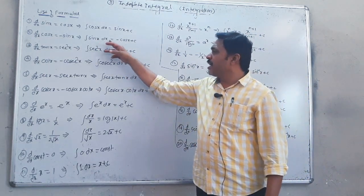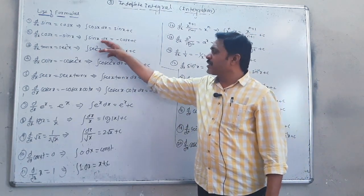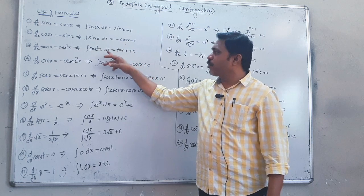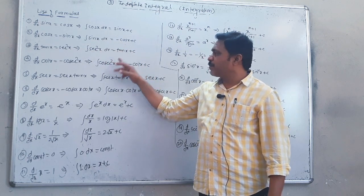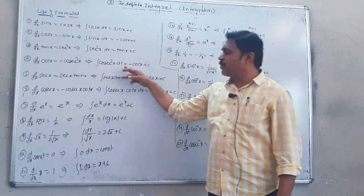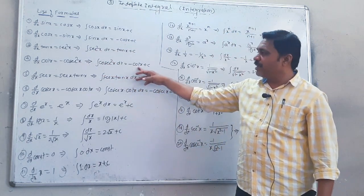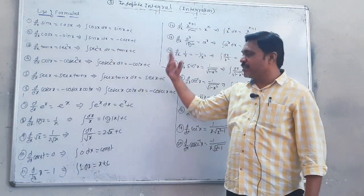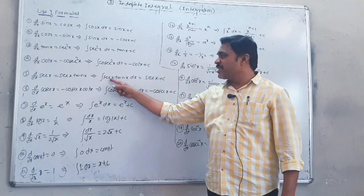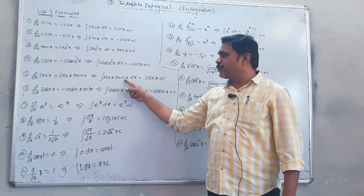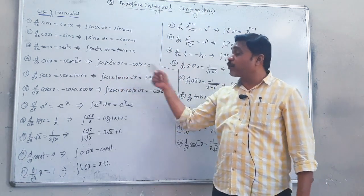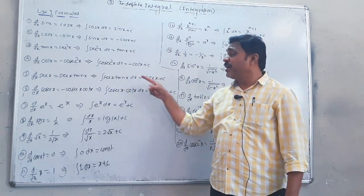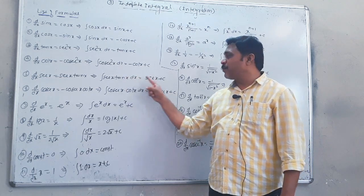The integral of sin x is sin inverse x plus c. Cosec squared is the minus part. The derivative of sec x is sec x into tan x.